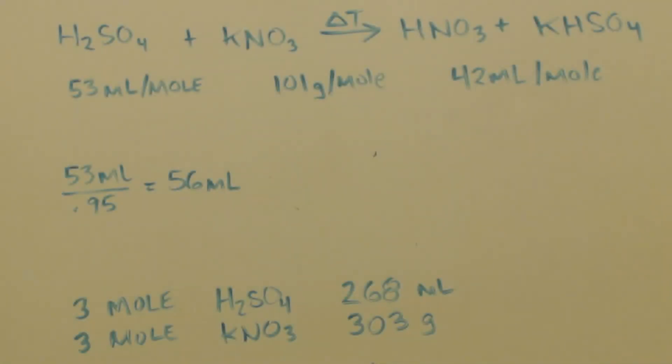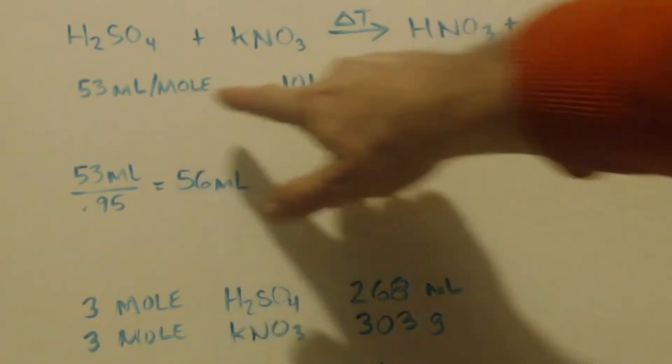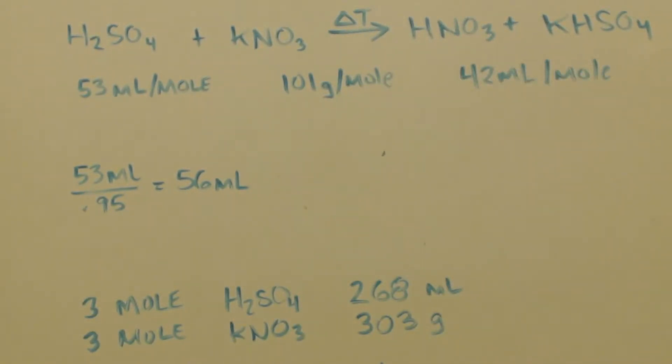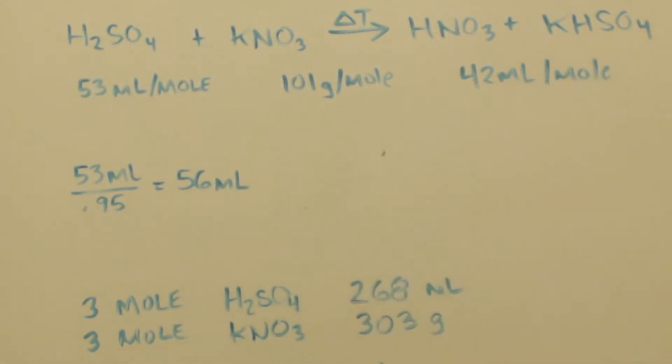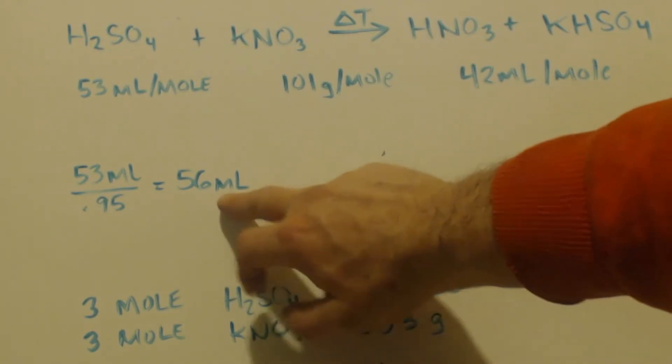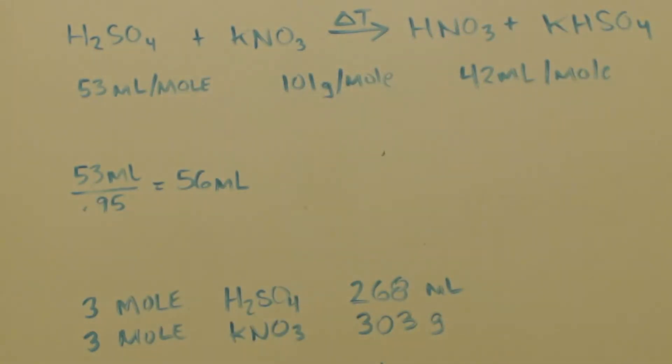And there's the equation at top. Sulfuric acid plus potassium nitrate makes nitric acid and potassium bisulfate. Here's your molar masses and molar volumes. If I, I'm just guessing, I put 95% sulfuric acid. So I divided so I can get how many milliliters I need out of the bottle to get this much sulfuric acid. 56 milliliters.